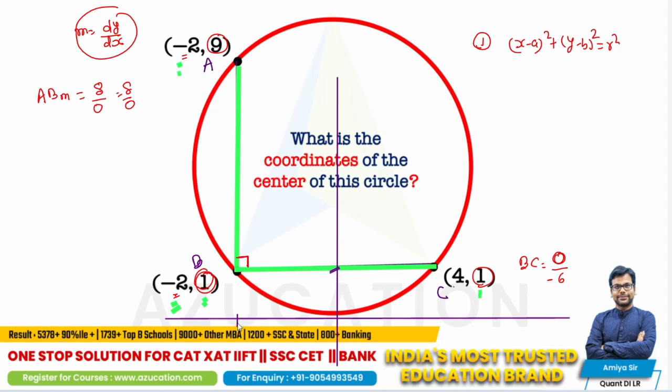So AB line is parallel to Y axis or perpendicular to X axis, and the BC line is parallel to X axis and perpendicular to Y axis. It means AB line and BC lines are perpendicular.